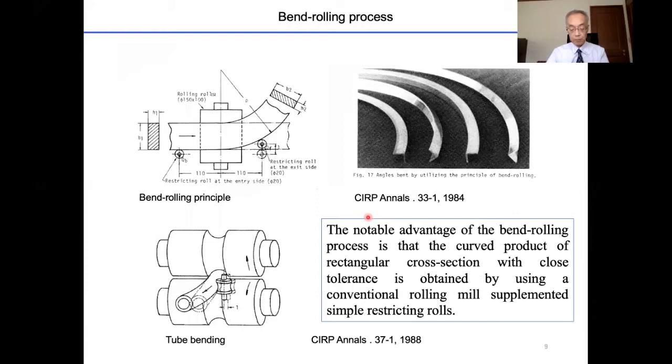He developed the bend-rolling process. It is a new method for bending a flat or a narrow strip in its plane. In this process, straight flat bar is rolled between horizontal rolls using the conventional rolling mill, and the outgoing rolled bar is forced to bend in a lateral direction with a restricting vertical roll placed at the exit side of the mill. This figure shows the experimental device.